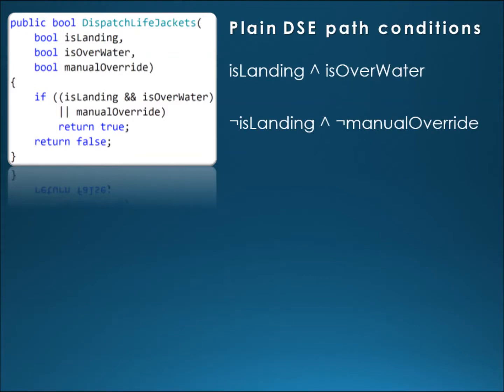In our artificial example, path conditions obtained from plain DSE would look as follows. The first one satisfies the branch returning true, and the second one satisfies the branch returning false. Note that path condition setting manual override to true would also satisfy the branch returning true.